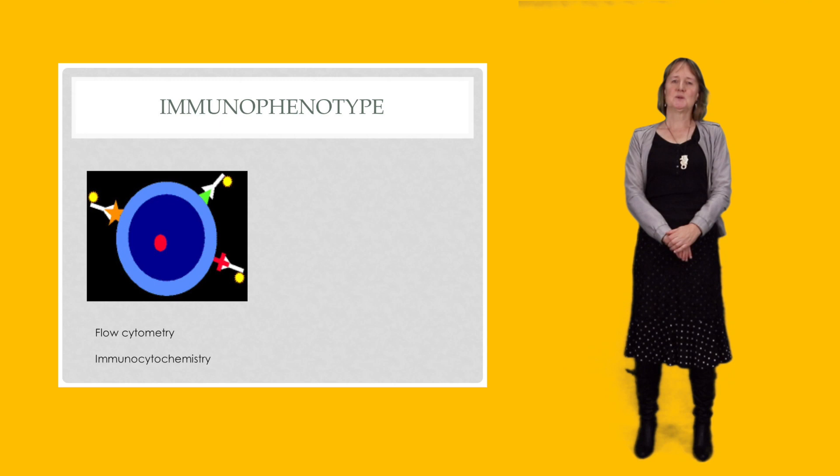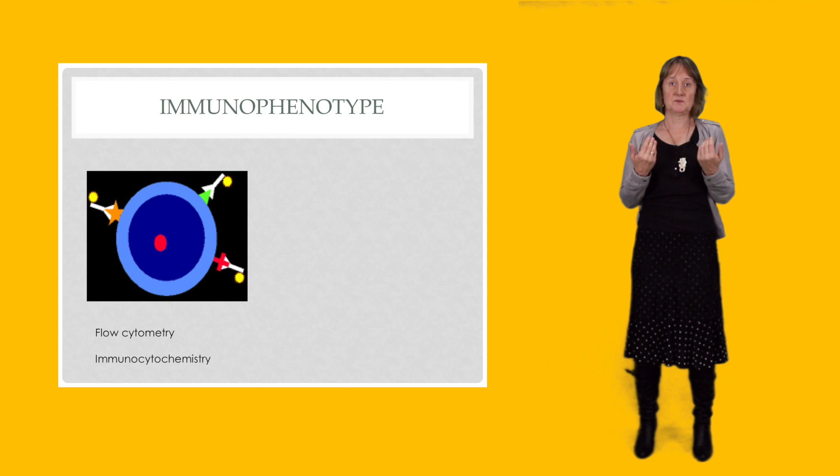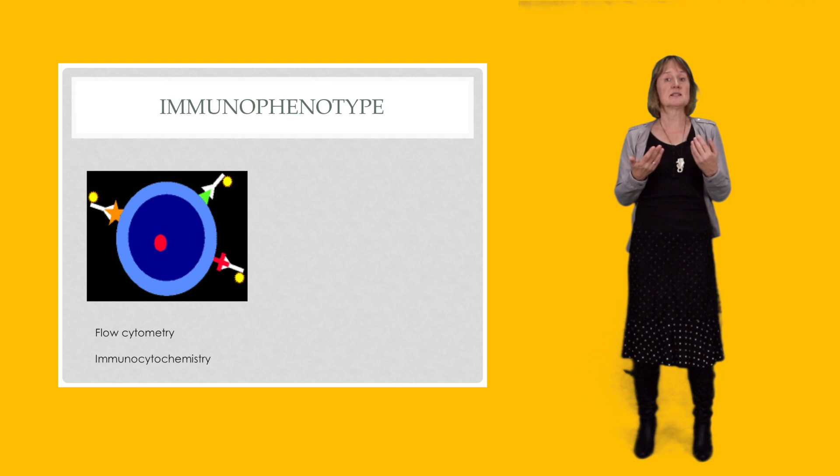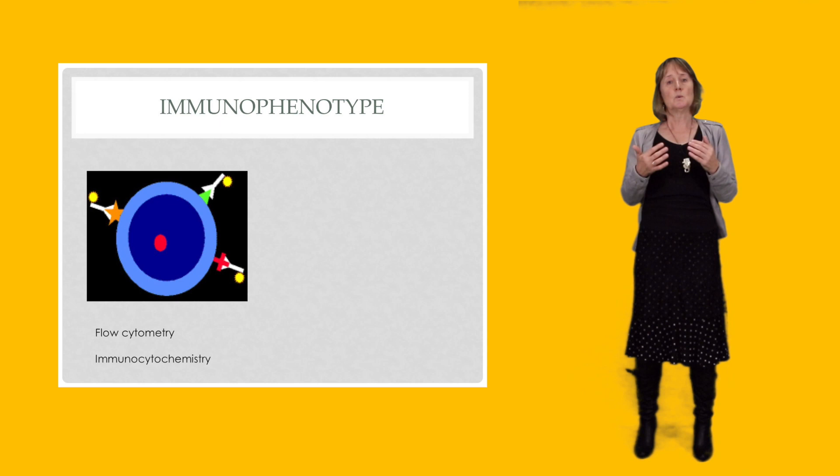So one of the other things that we do in the laboratory is we look at the antigens presenting on the cell surface. Because this gives us information, primarily on lineage. Remember we said that most hematological malignancies are either myeloid or lymphoid, so we'll get information on whether the malignancy we're looking at is myeloid or lymphoid. It will also give us information on what the stage of maturity of that malignancy is.